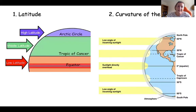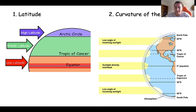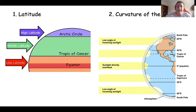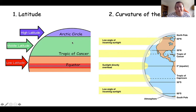Latitude is basically how high or low you are on the Earth's surface. The equator is at zero degrees latitude — low latitude. The North Pole is 90 degrees north and the South Pole is 90 degrees south, so both have a high latitude. The UK is roughly at about 60 degrees, so we're at middle latitude.